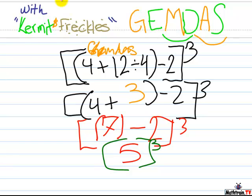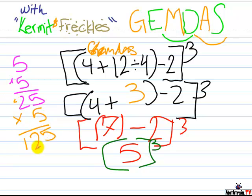5 times 5, that equals 25. And then 25 times 5 equals 125. So our answer is 125.